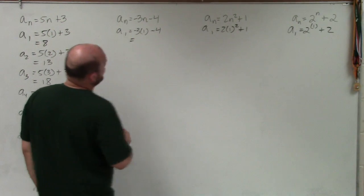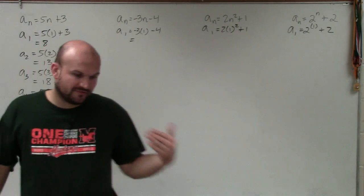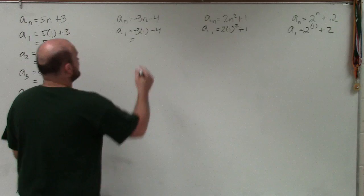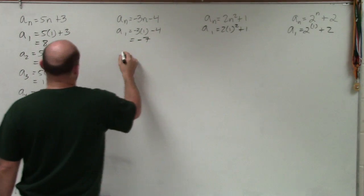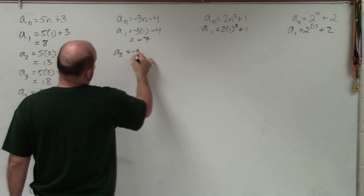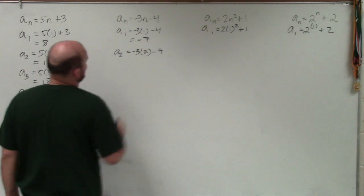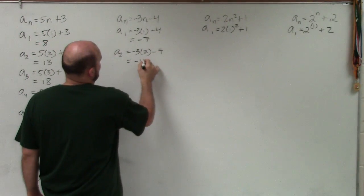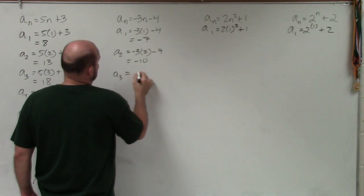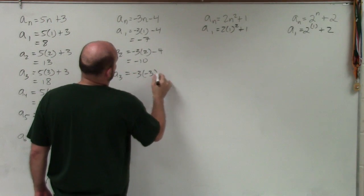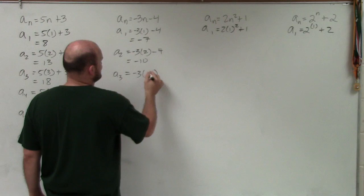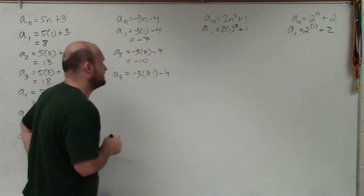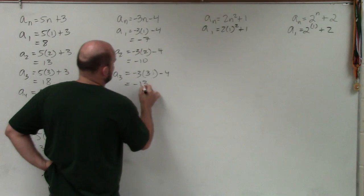So let's see. Negative 3 times 1 is a negative 3. If you have negative 3 minus 4, so that means you owe me $3, you borrow four more. That's going to be negative 7. A sub 2 is negative 3 times 2 minus 4. Negative 3 times 2 is negative 6. Negative 6 minus 4 is going to be negative 10. A sub 3 is negative 3 times 3 minus 4. Negative 3 times 3 is going to be negative 9. Minus 4 is going to be negative 13.